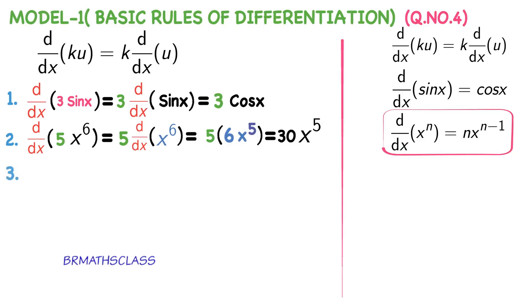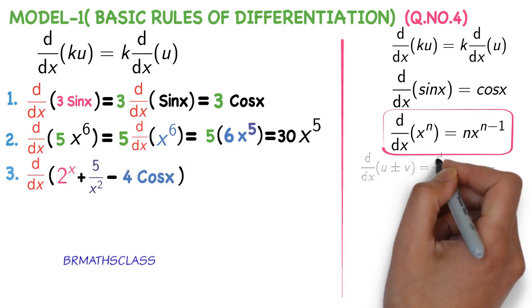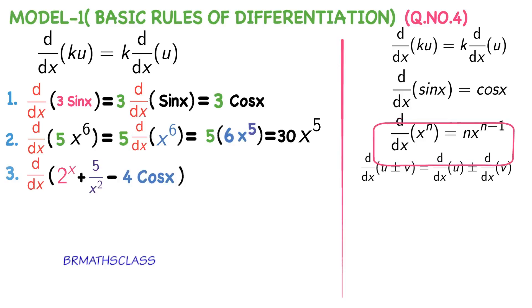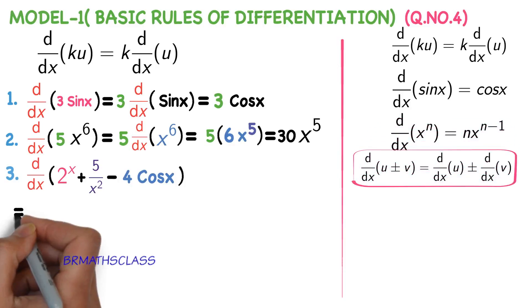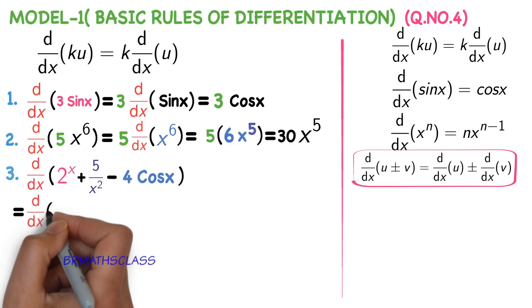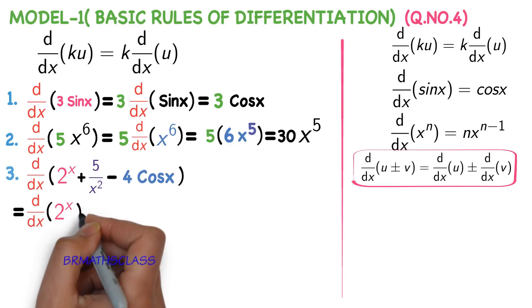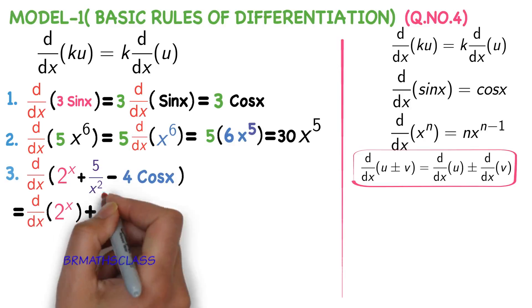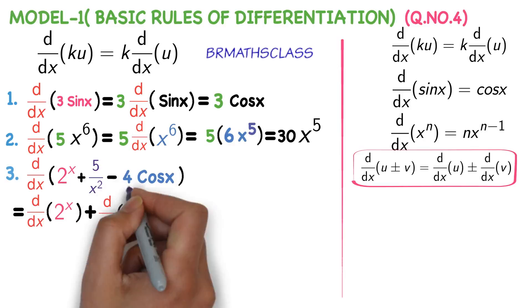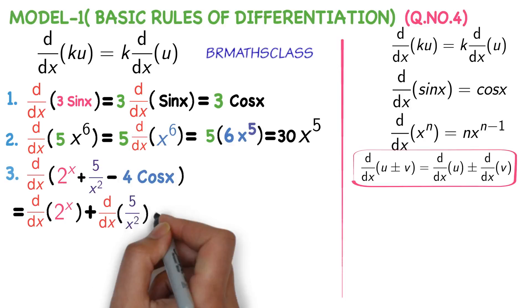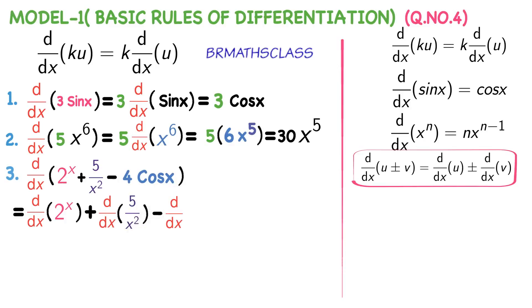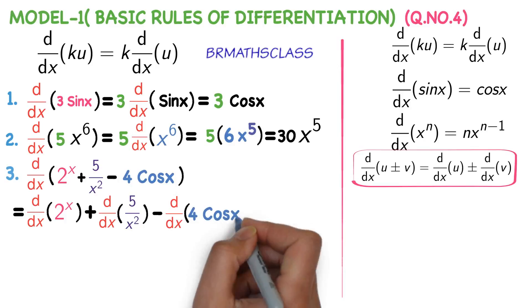Now we will see one more problem. d by dx of 2 power x plus 5 divided by x square minus 4 into cos x. How to differentiate this expression? You know the formula: d by dx of u plus v is derivative of u plus derivative of v. That means we need to differentiate each and every function. So I will write this as d by dx of 2 power x plus d by dx of 5 divided by x square minus d by dx of 4 into cos x.